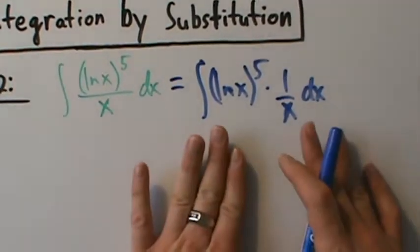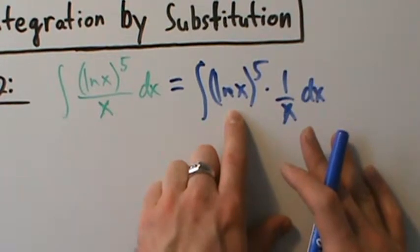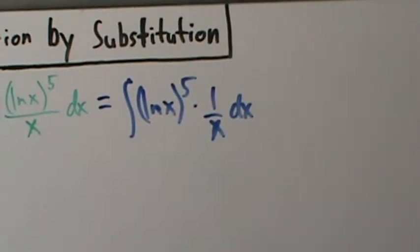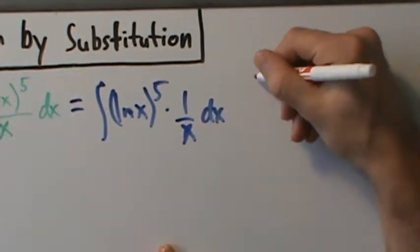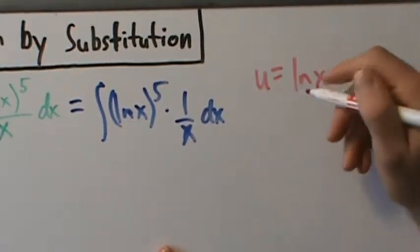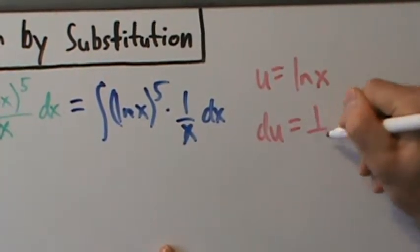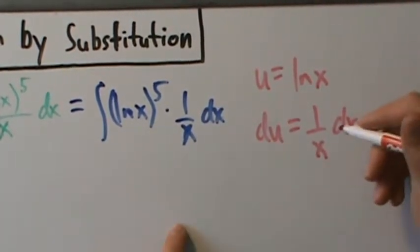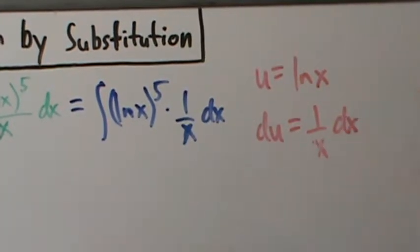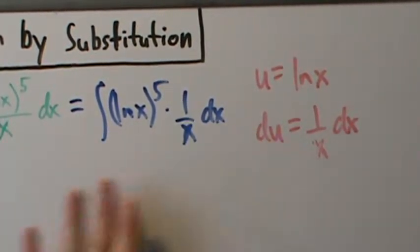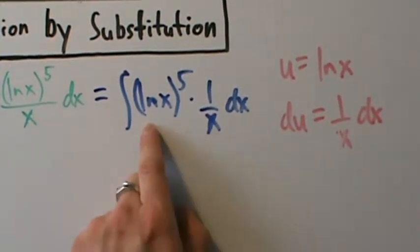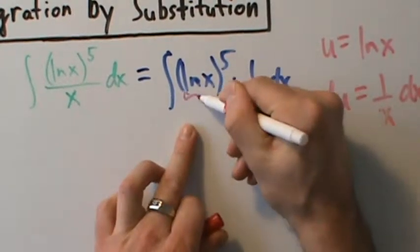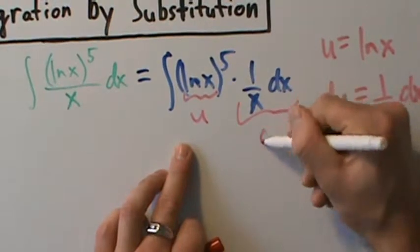Do we see a function and its derivative anywhere here? Well, here's natural log of x. And what's the derivative of natural log of x? It's 1 over x. So what we can say is: let u be natural log of x. Then du is going to be 1 over x dx — we've got to have that dx there, you've got to be very careful with your details. So natural log of x is u, and 1 over x dx is du.